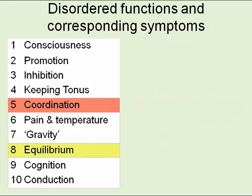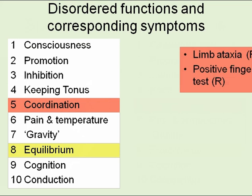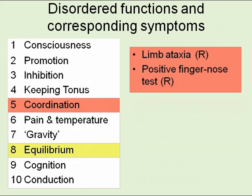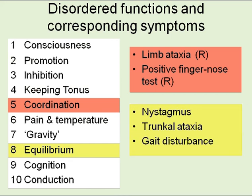Disordered functions: disorder of coordination is expressed as limb ataxia and a positive finger-nose test. Disorder of equilibrium is expressed as nystagmus, truncal ataxia, and gait disturbance.